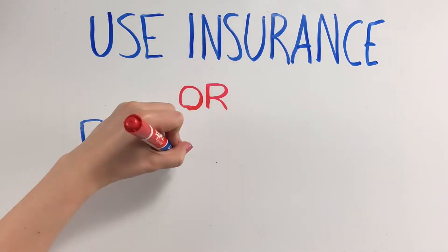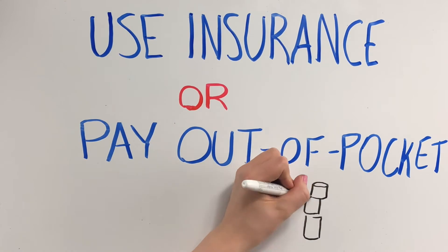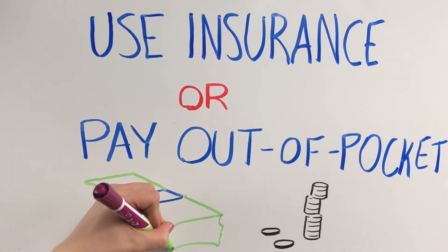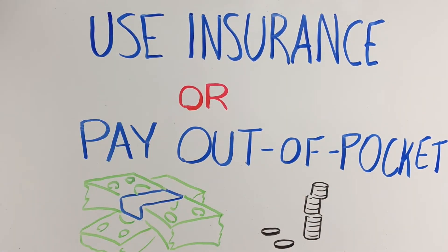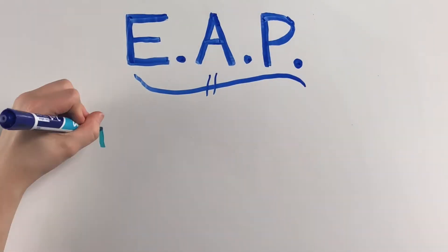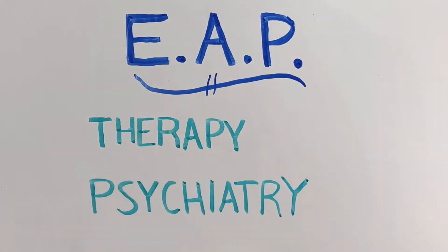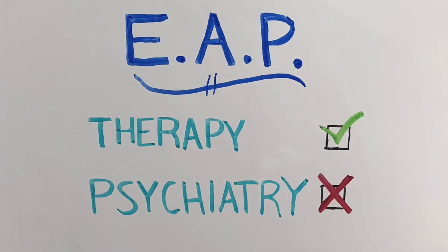If you want to continue seeing your therapist once your allotment of EAP visits runs out, you can do that using your insurance benefits or paying out-of-pocket. It is important to point out that EAPs are for therapy only and do not cover the costs of doctor's appointments. Therefore, psychiatric services would not be covered by an EAP.